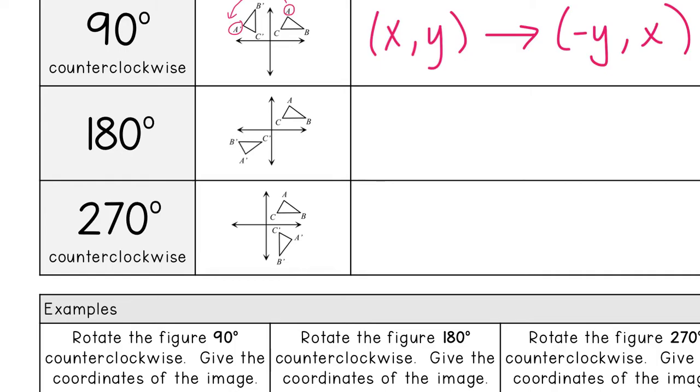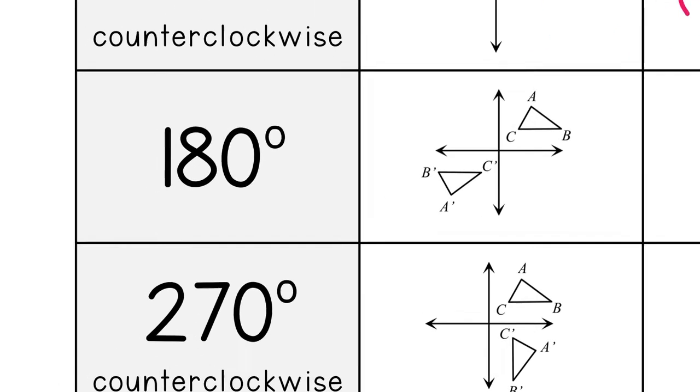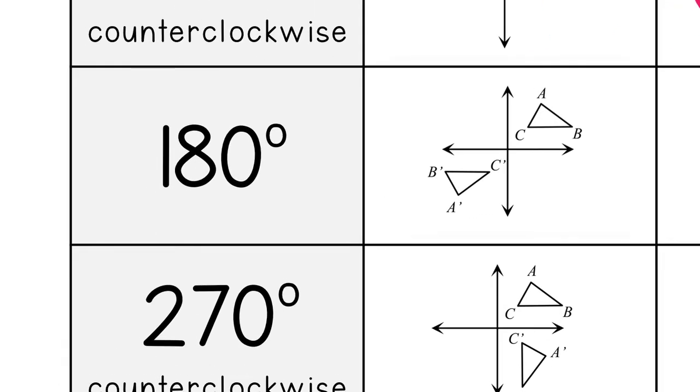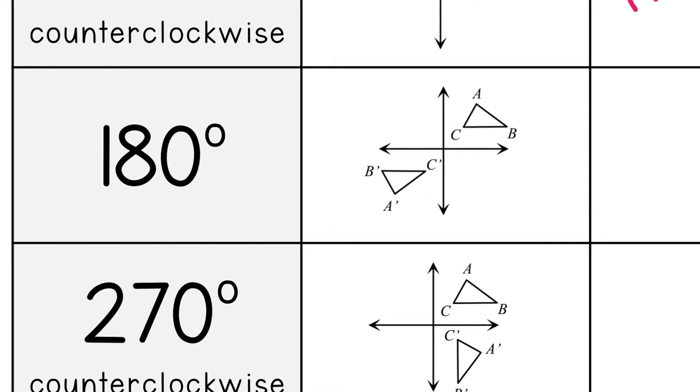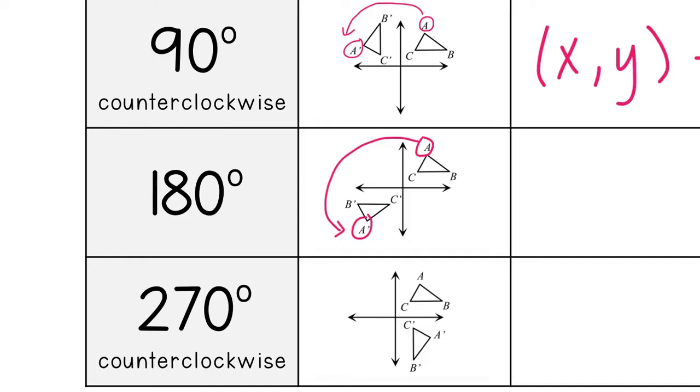The next one, when you're going 180 degrees, notice how I didn't put a direction on this one because no matter which direction you go, 180 degrees will always be the same. So here's A, here's A prime. See how the turn was a bigger turn.